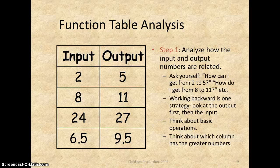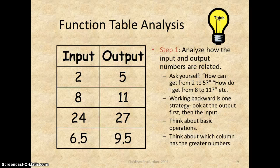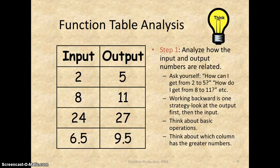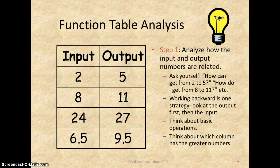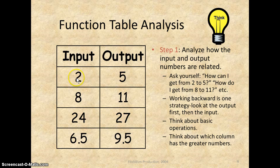In step one, you're given a function table with your input and output. Input is your left side, output is your right side. Input is your x, output is your y. So as you look at this, you want to look at the rule of what's taking place or try and find the rule. So you ask yourself, how do I get from 2 to 5, 8 to 11, and so forth.